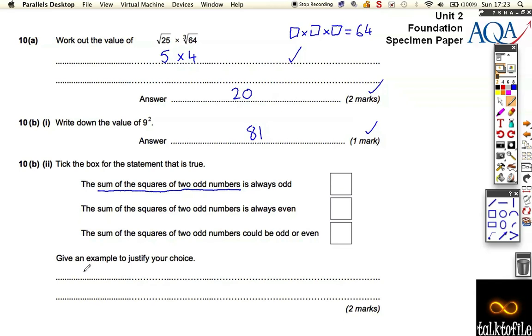Let's try some. We've got to square two odd numbers, so let's try 3 squared plus 5 squared. That makes 3 times 3 is 9, 5 times 5 is 25. That adds up to 34, so that's even.